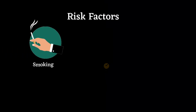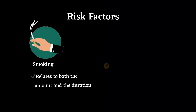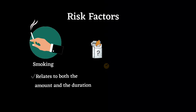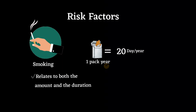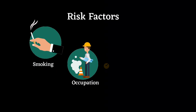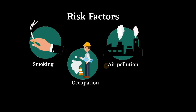Cigarette smoking represents the most significant risk factor for COPD, relating to both the amount and duration of smoking. It is unusual to develop COPD with less than 10 pack-years, which is the average number of packs of cigarettes smoked per day multiplied by the total number of years of smoking — one pack-year equals 20 cigarettes per day per year. Occupational exposures include coal miners and those who work with cadmium, ambient air pollution, and passive or second-hand smoking.